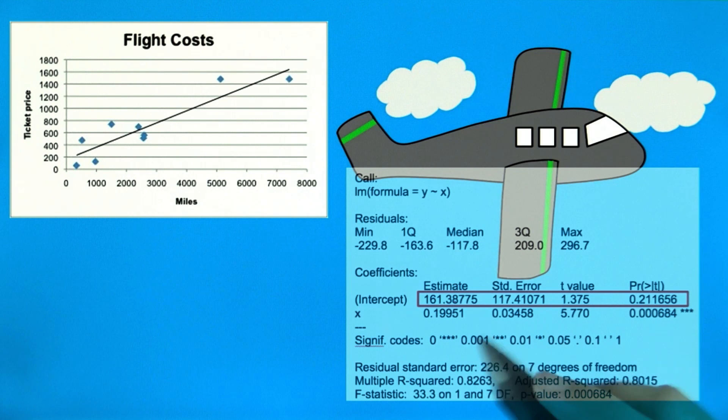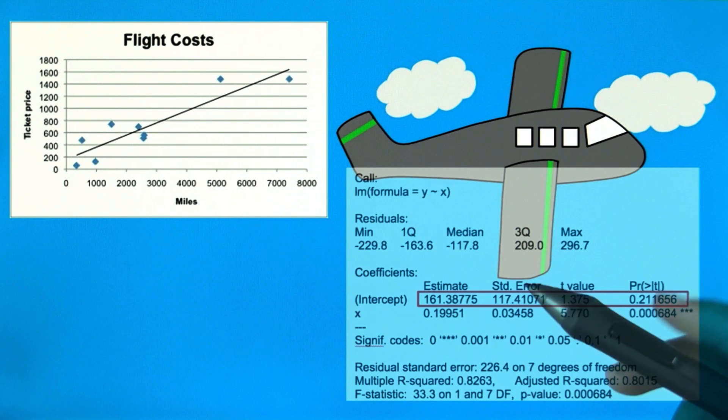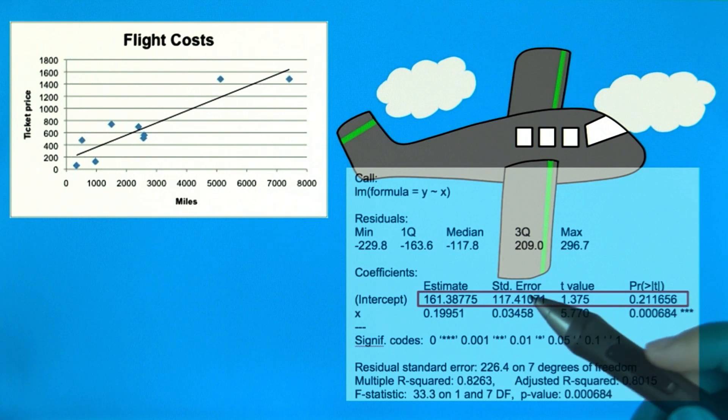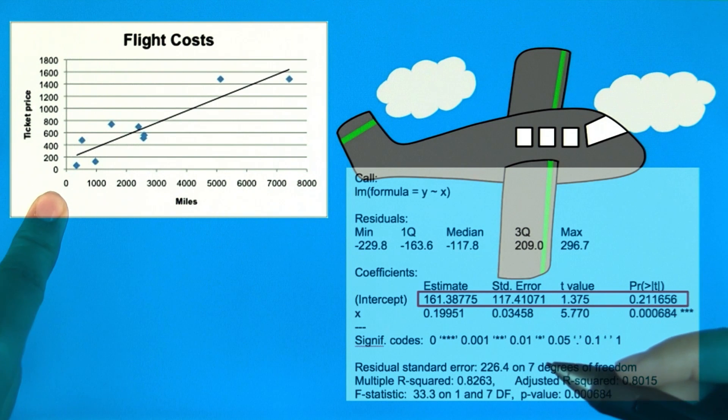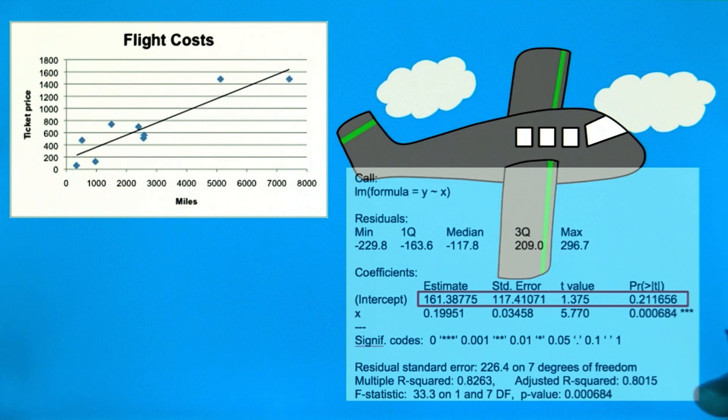However, in many cases, the estimate for the intercept is not of interest to researchers. One reason is that this value could have no meaning in real life because x equals zero may not be realistic. For example, the price of iPods at the year 0 AD. iPods weren't even invented back then.